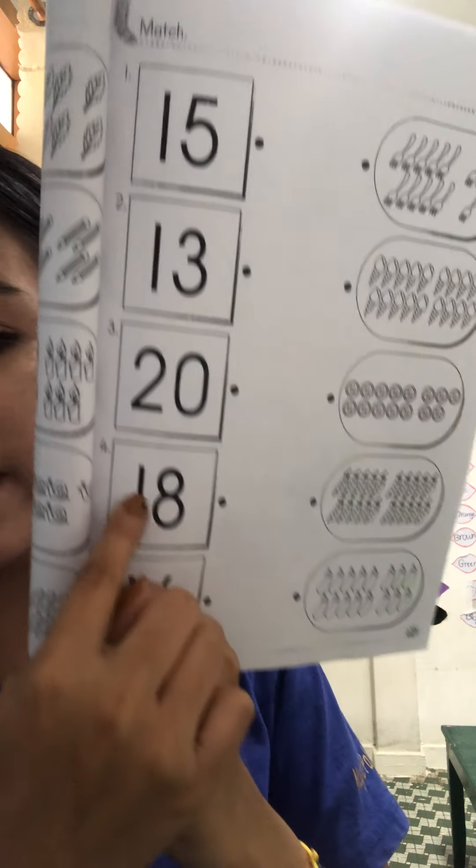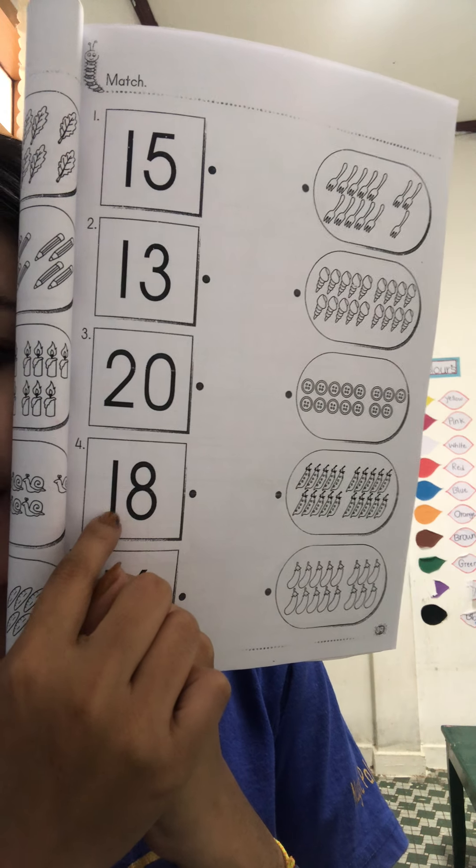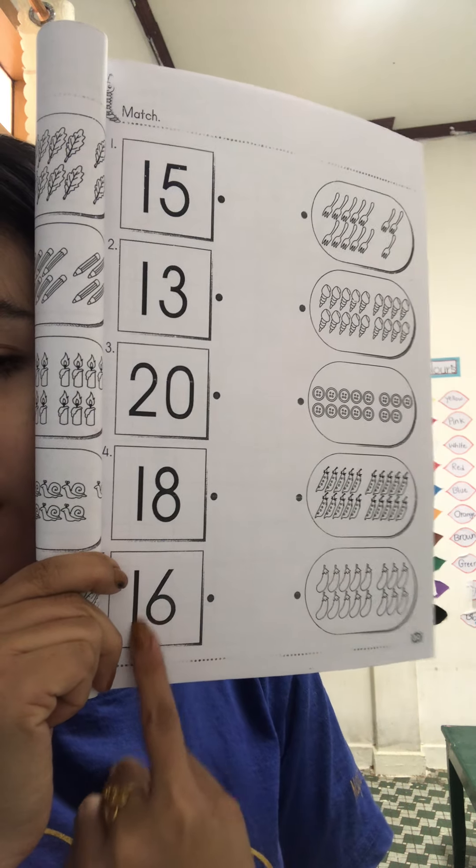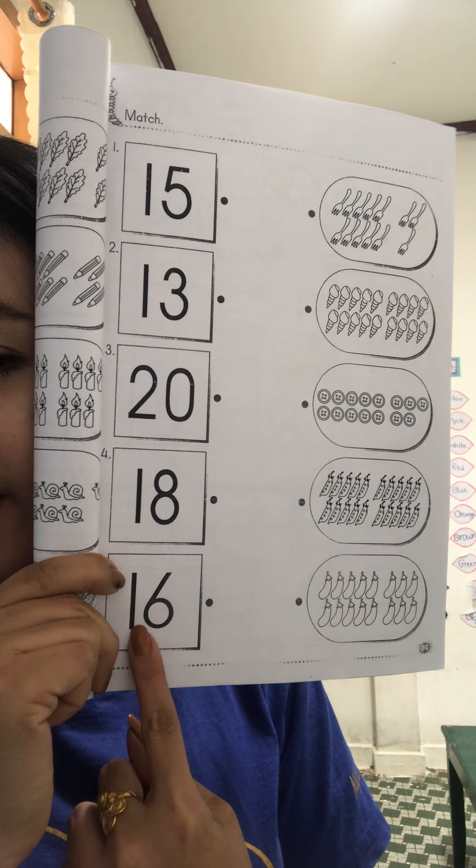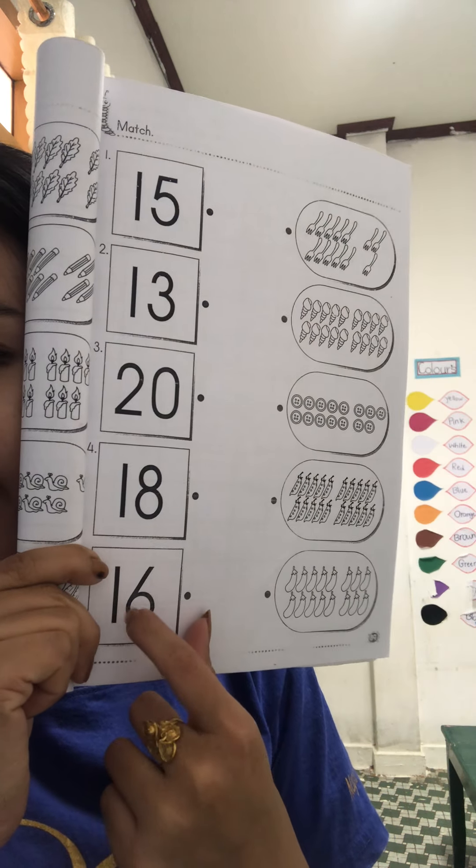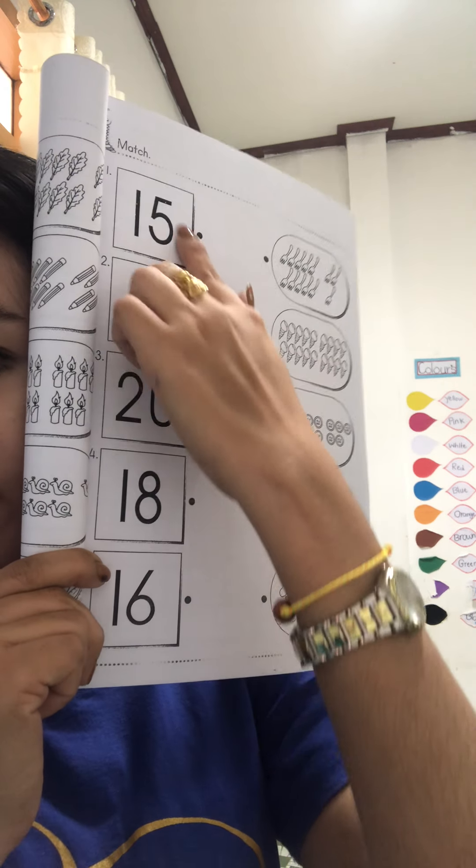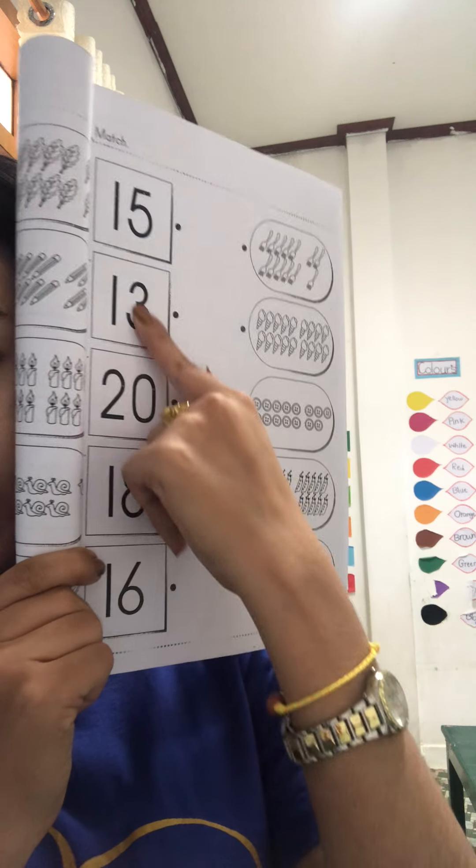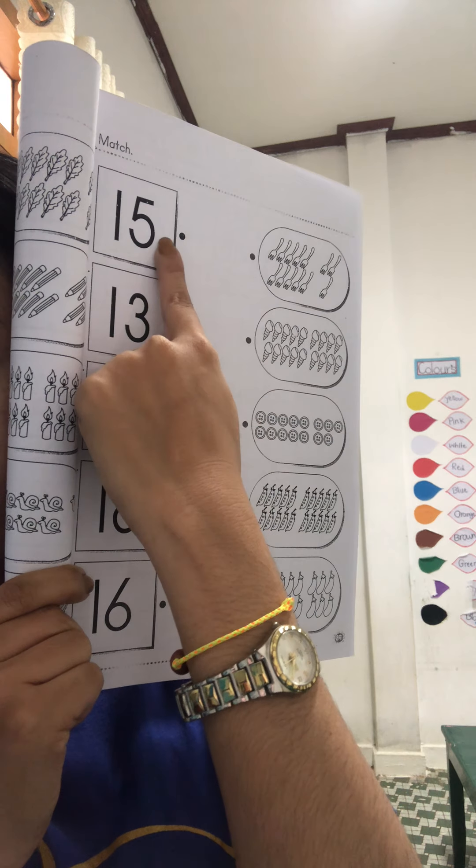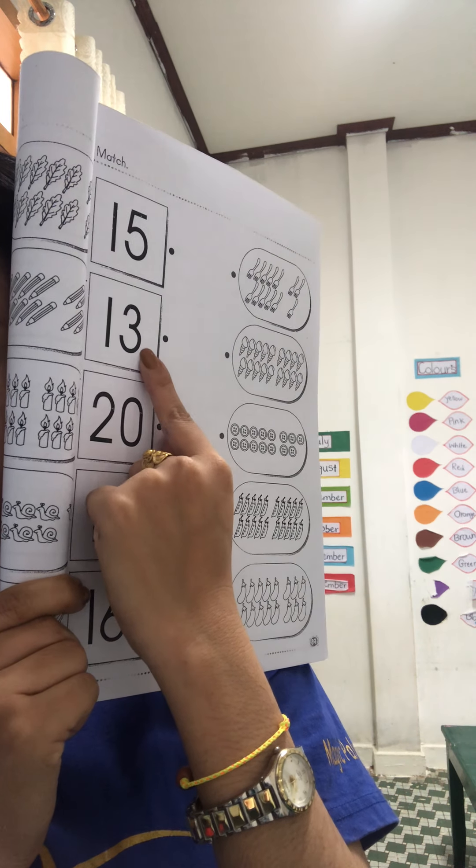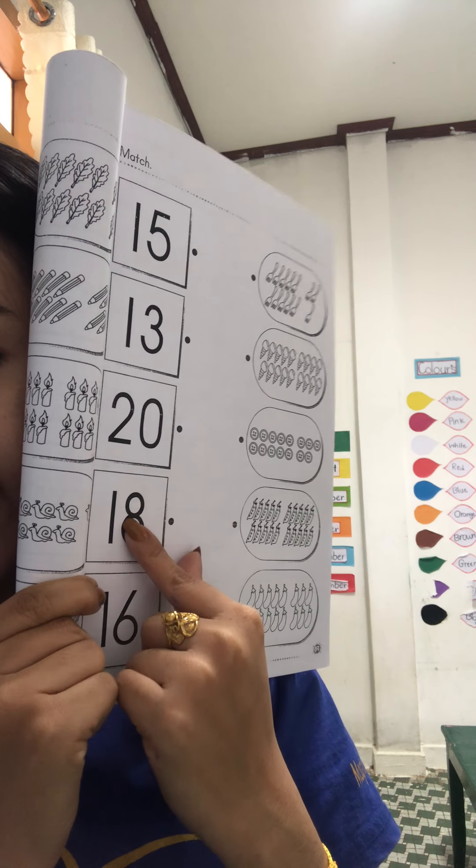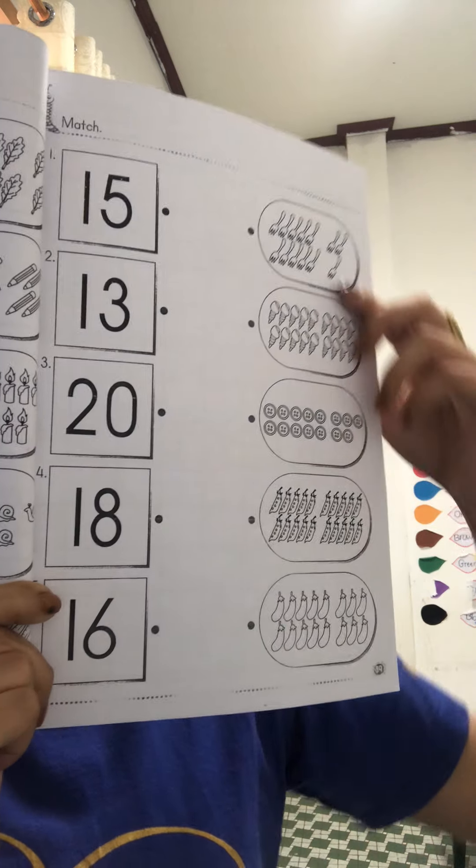And this one, what number? Number 18, yes, 18, okay. And this one, number 19, yes, number 19, okay. This one is number 3, okay. 15, 13, 20, 18, 19, okay.